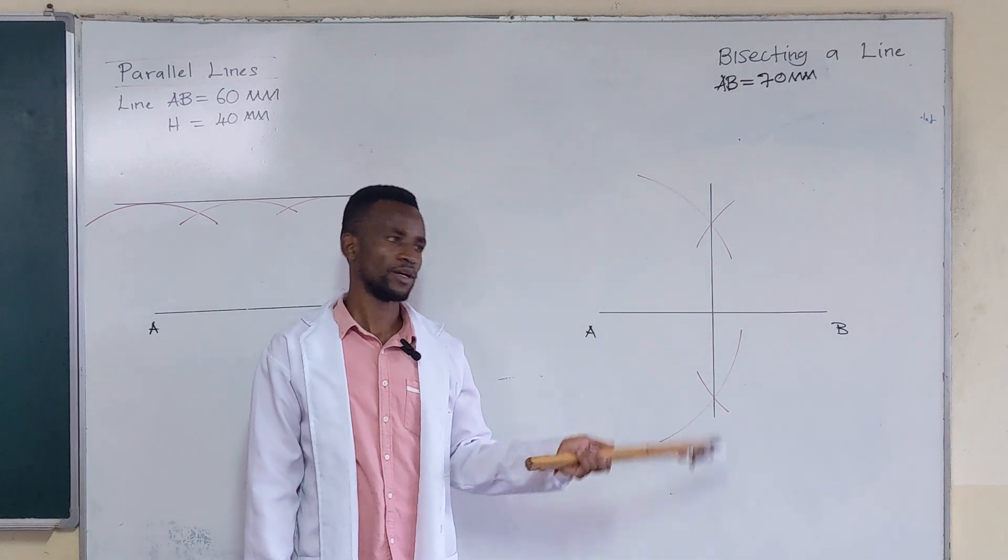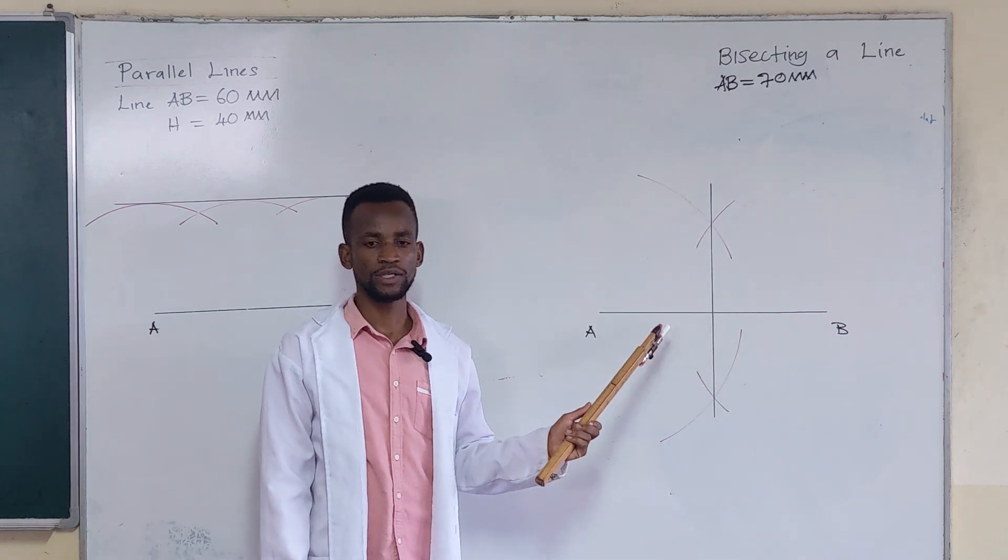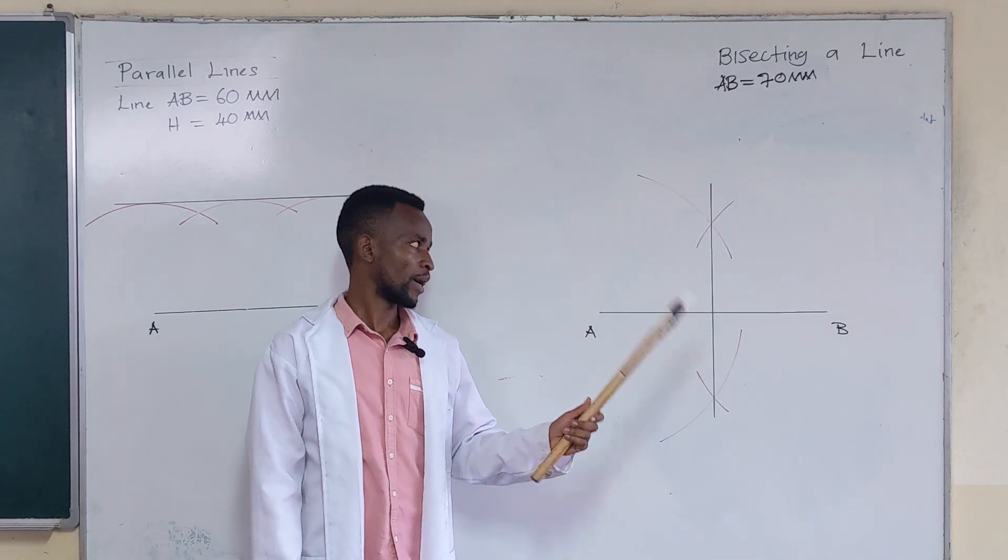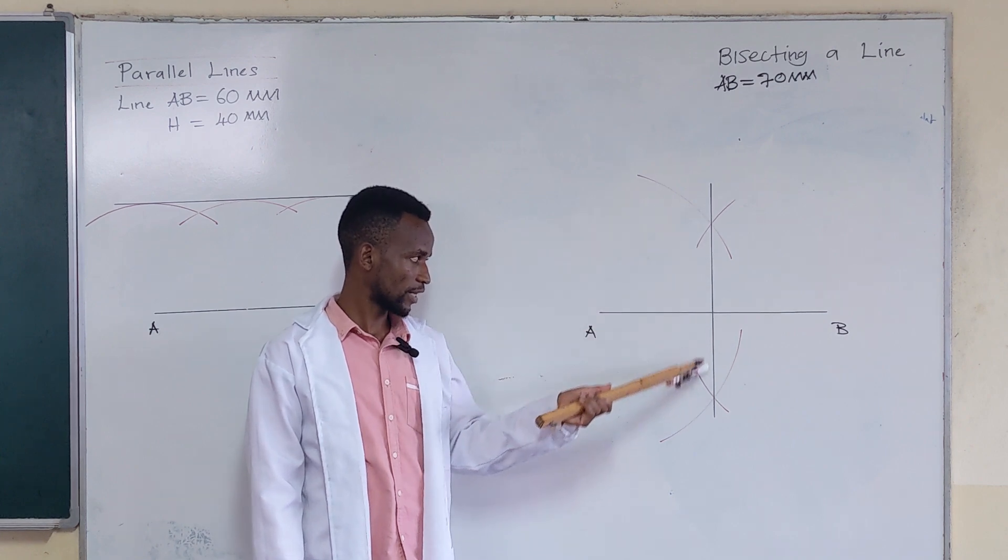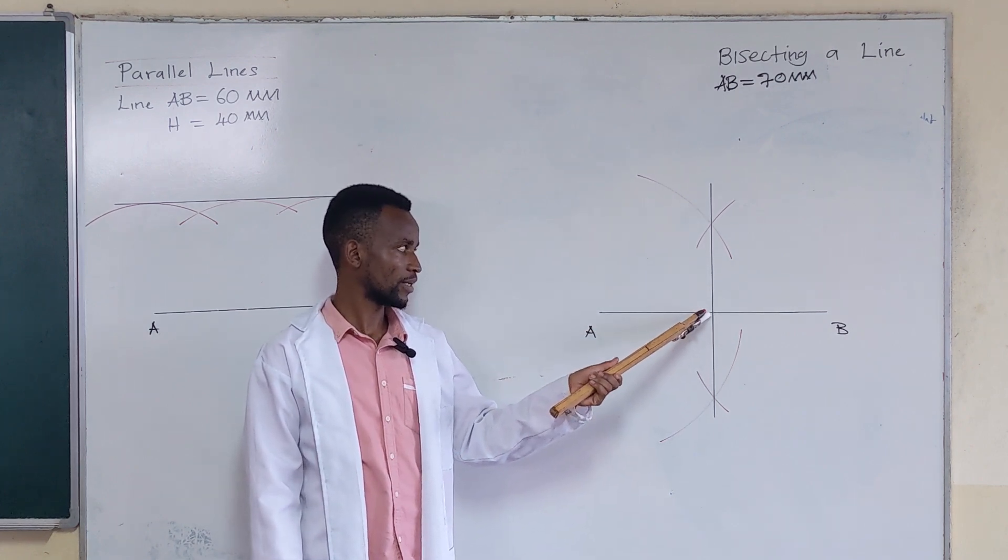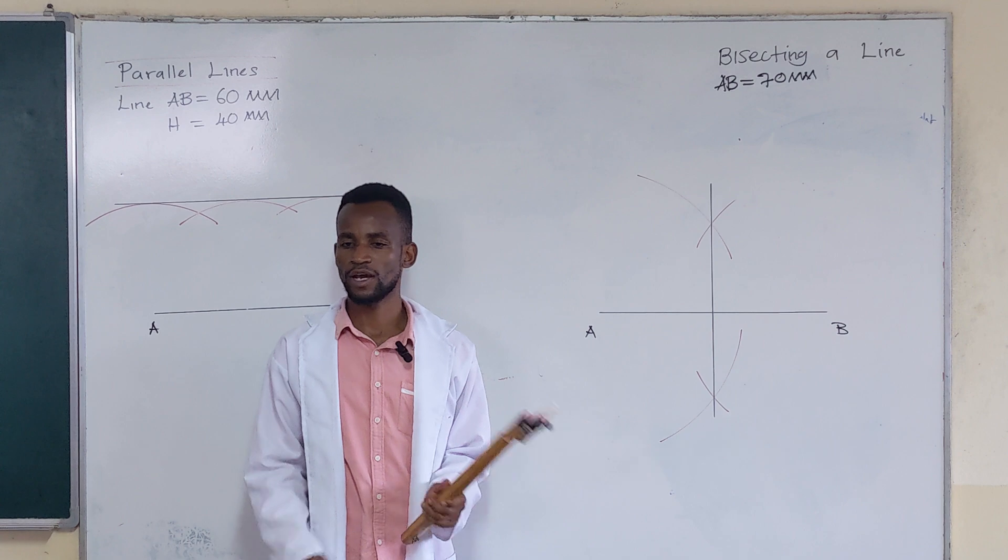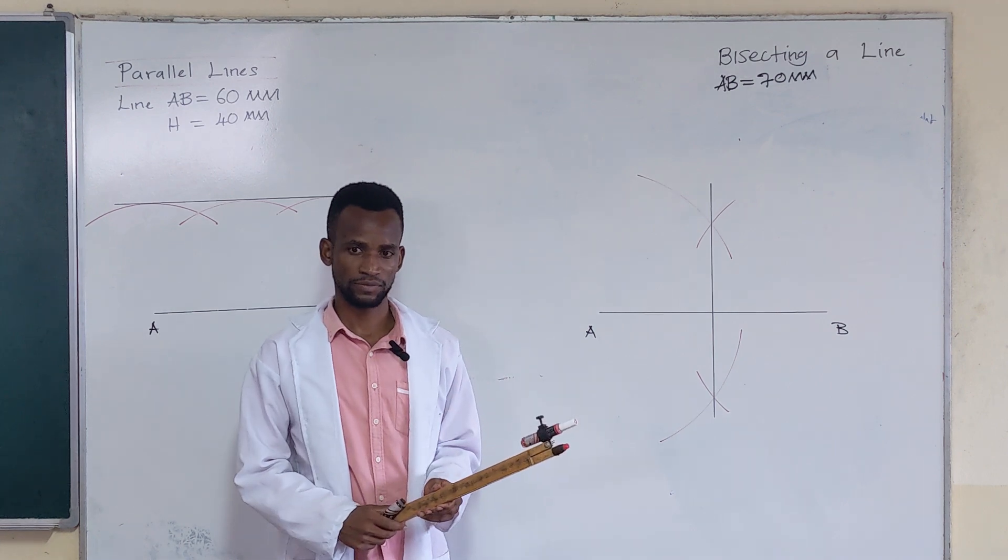It is cutting line AB at a certain point, meeting it at an angle of 90 degrees. Hence the name perpendicular bisector, because the other name for 90 degrees is a perpendicular angle.